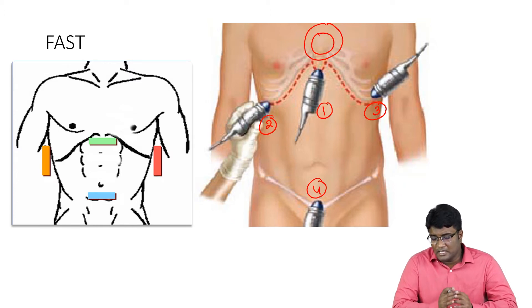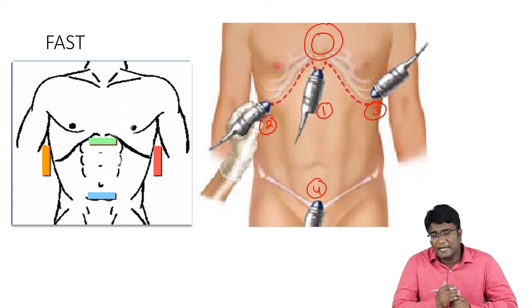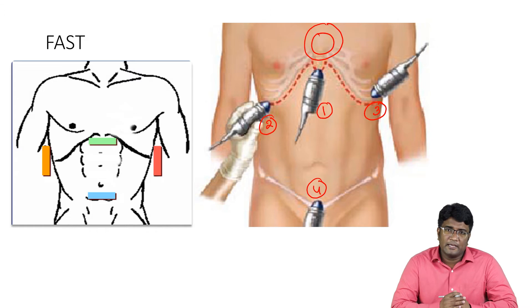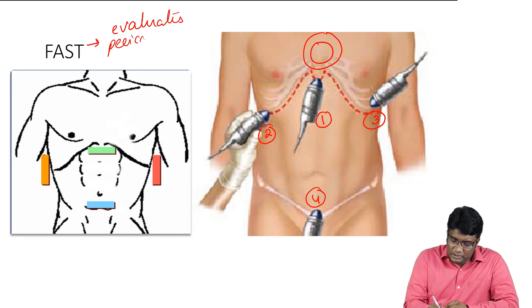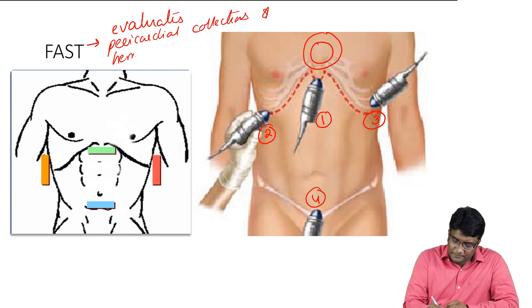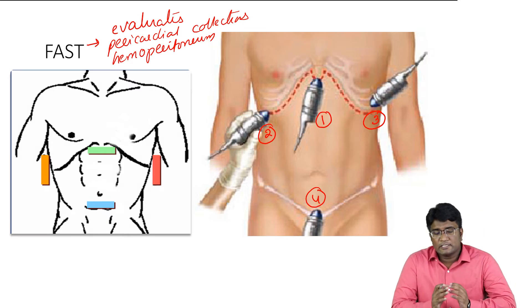These are the four views collected in FAST: a sub-xiphoid view to look at pericardial collections, a right flank view to look at perihepatic collections, a left flank view to look at perisplenic collections, and a pelvic or suprapubic view to look at pelvic hematomas. FAST evaluates both pericardial collections as well as hemoperitoneum.